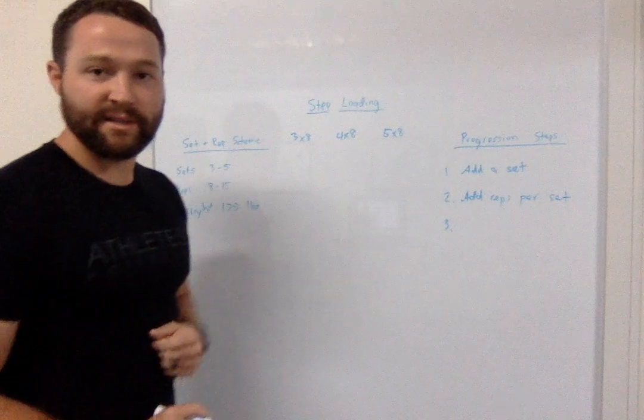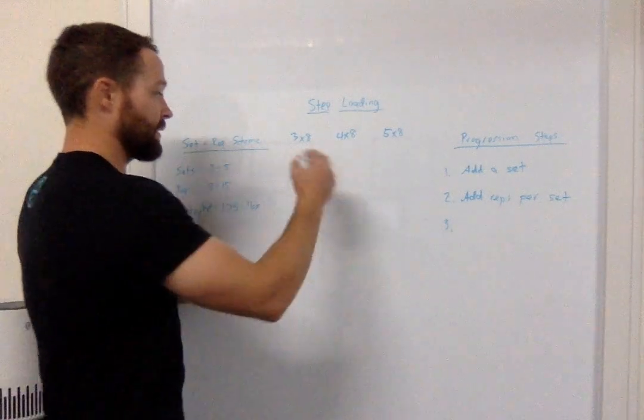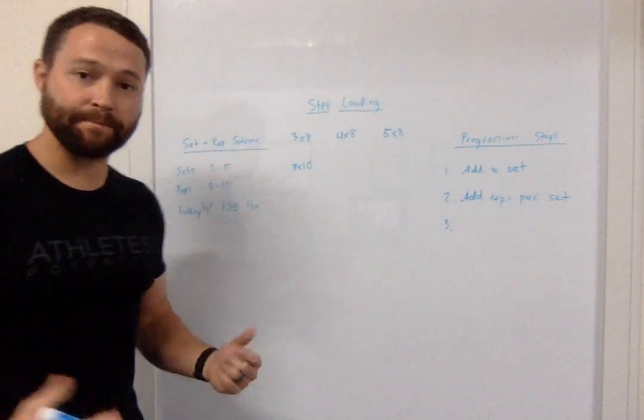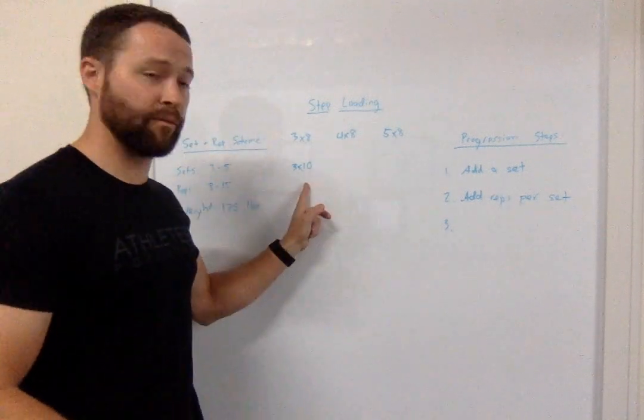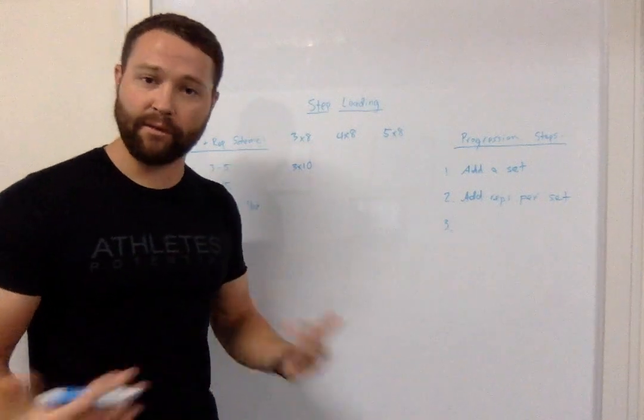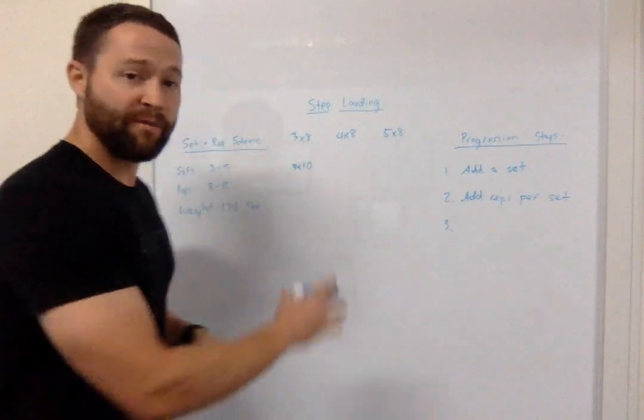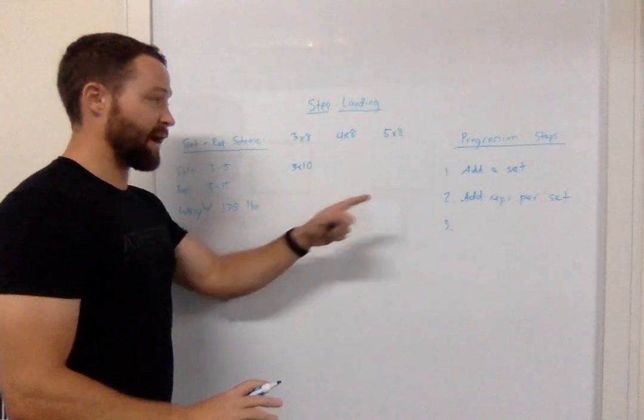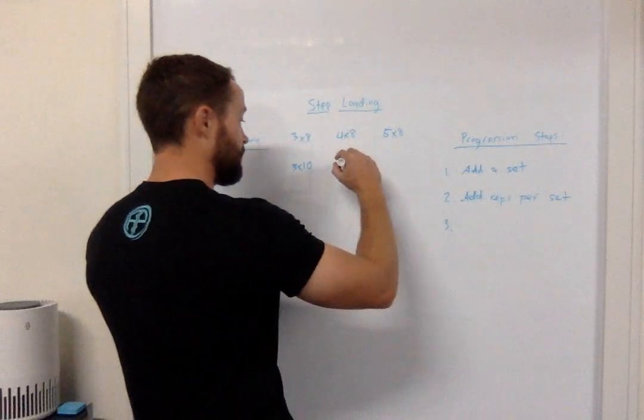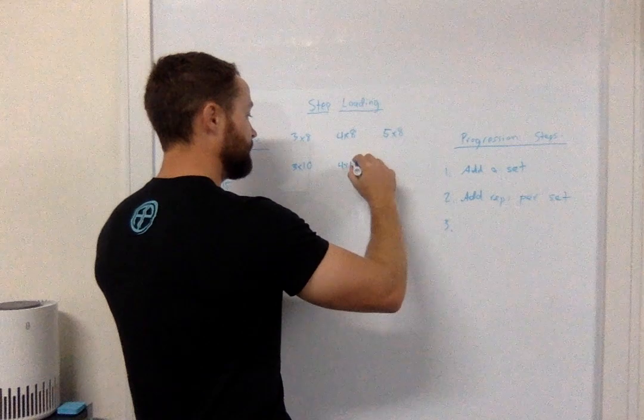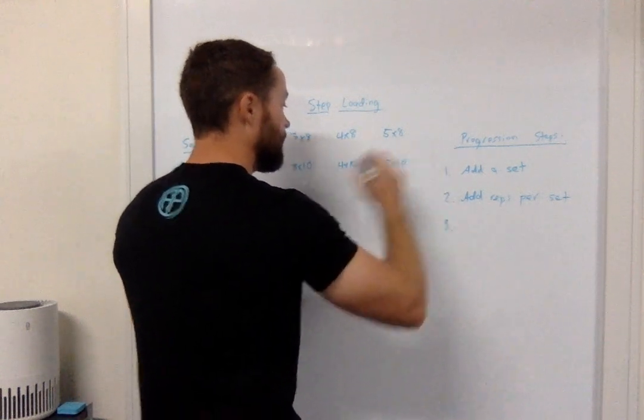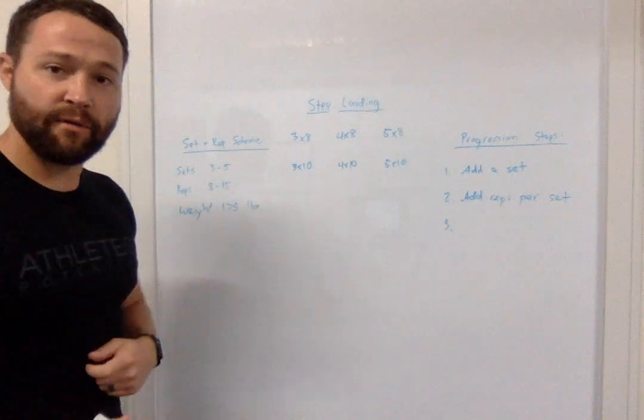So this five sets of eight would now look something like three sets of ten maybe. Because we want to make sure that we're not going straight from five sets of eight to five sets of ten. That would probably be too much. So we're following this table. And if you're tracking we're just going to keep going with the same exact pattern. So we're going to go to four sets of ten, five sets of ten, so on and so forth.